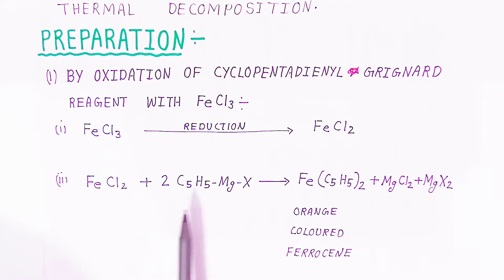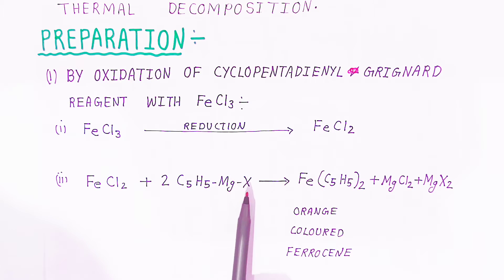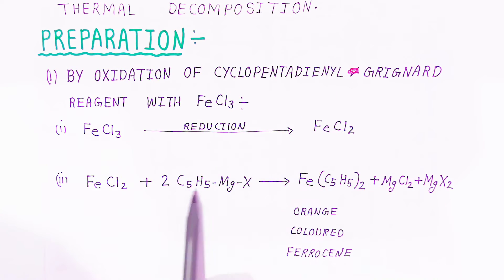This reacts with the cyclopentadienyl magnesium halide - the Grignard reagent which contains cyclopentadienyl. Instead of RMgX we have written cyclopentadienyl magnesium halide. This is the Grignard reagent which contains this group.